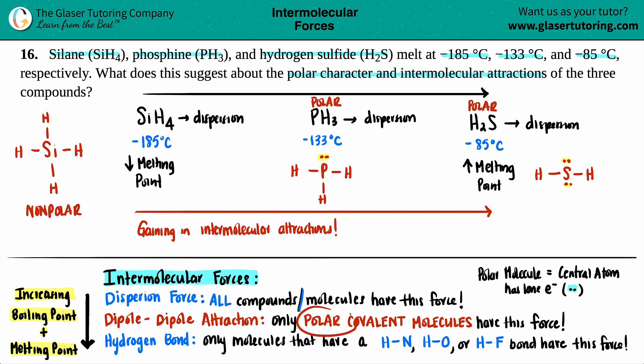If you have a polar covalent molecule, you have a new intermolecular force, which is a dipole-dipole attraction. So these two have dipole-dipole attractions. Just to put it into perspective, SiH4 does not have dipole-dipole attractions because this molecule is symmetrical. It's nonpolar.